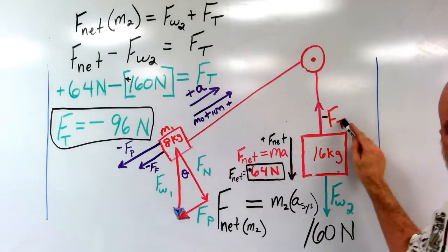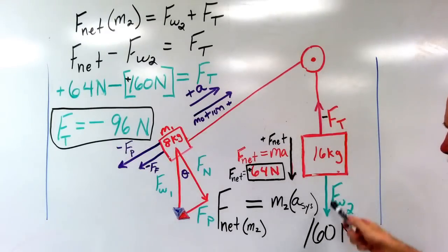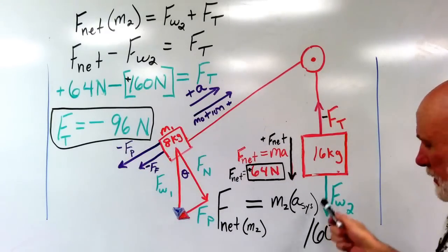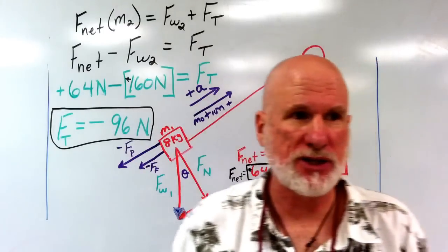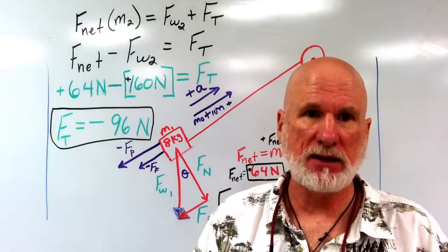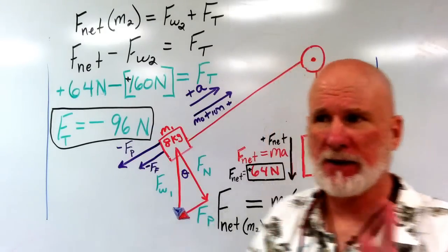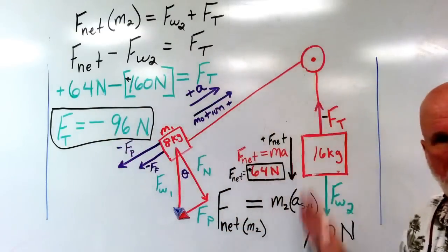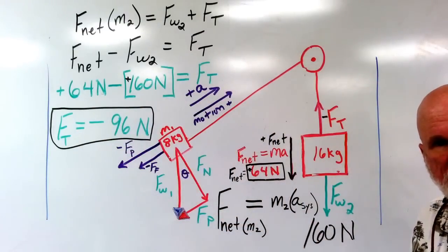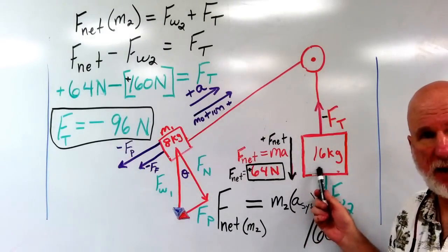What I want to find is the tension in the cord, which is going to be opposite this weight, 160 newtons. 160 newtons is from 16 kilograms times 10 meters per second squared. I know that the system accelerated 4 meters per second. That's what this block is accelerating.